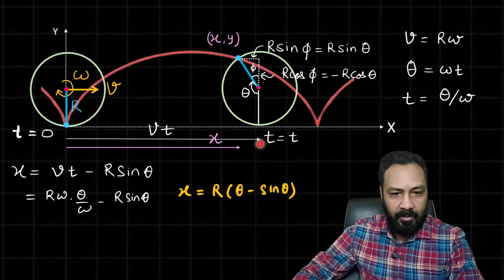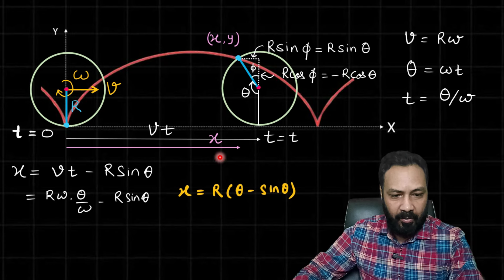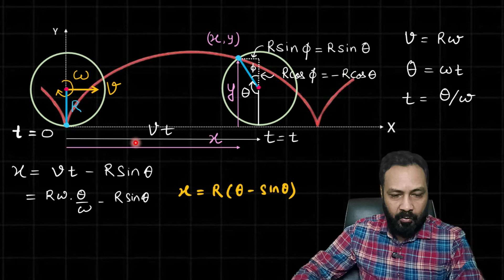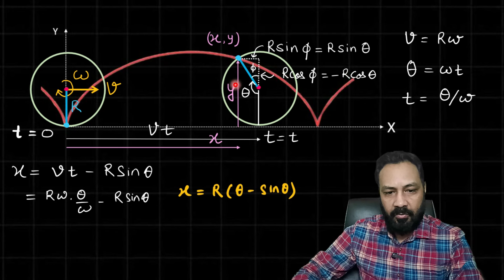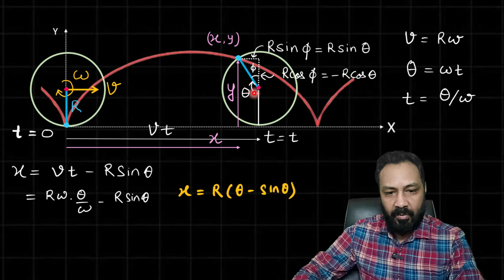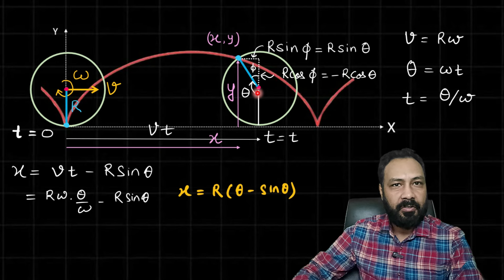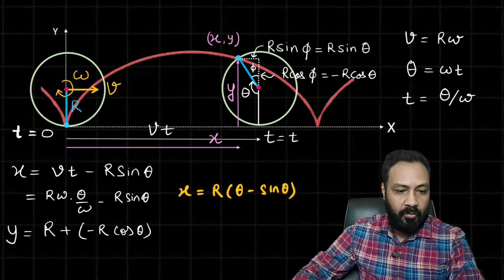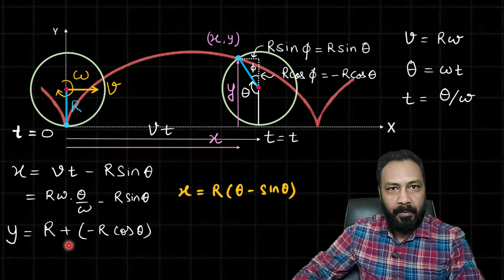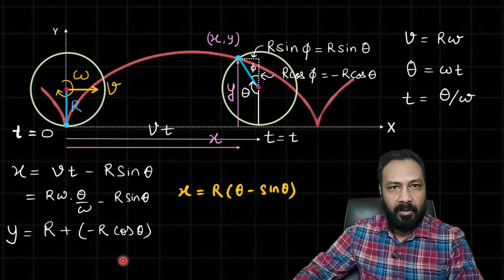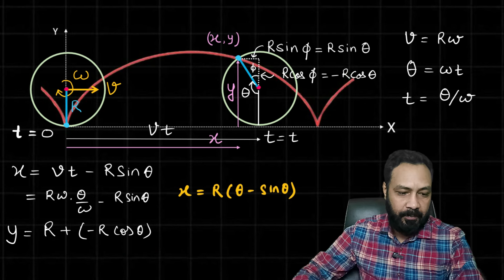Now y coordinate is also very simple. At time t, this is the y coordinate. So this length is the y coordinate, and you can see this y is the sum of this r and this is r minus r*cos(theta). So y = r + (-r*cos(theta)). Take r common, r(1 - cos(theta)).